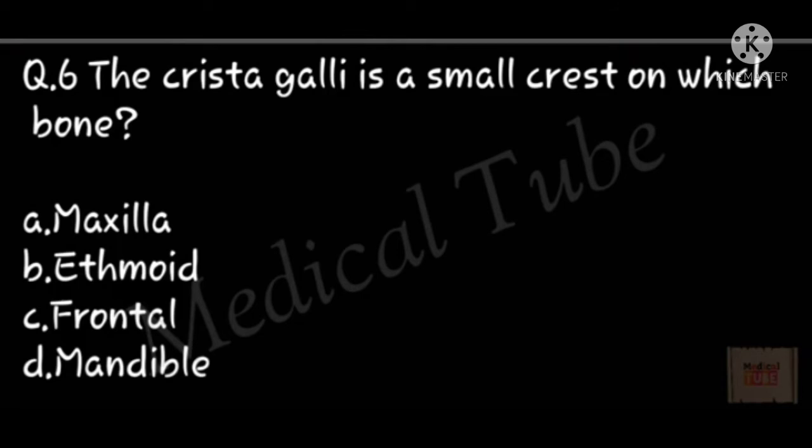Sixth number question: the crista galli is a small crest of which bone? Correct answer is B, ethmoid.